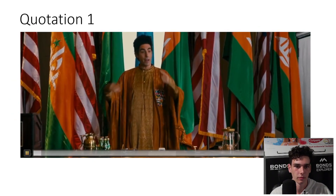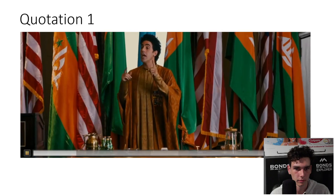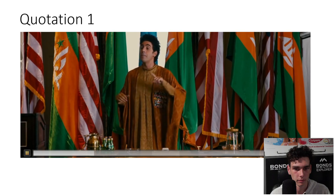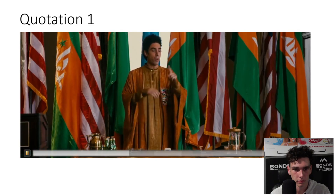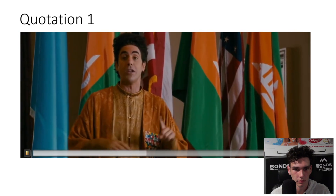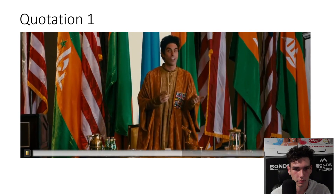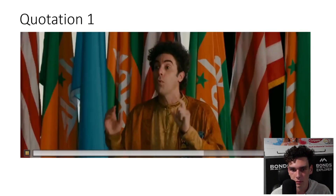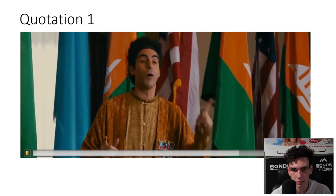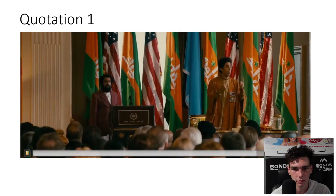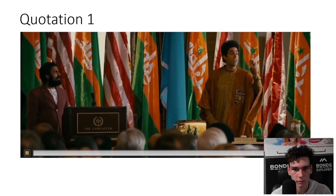An example of this is when he's trying to convince a large audience in America that dictatorships are good and should be supported. This is the scene: "Imagine if America was a dictatorship. You could let 1% of the people have all the nation's wealth. You could help your rich friends get richer by cutting their taxes and bailing them out when they gamble and lose. You could ignore the needs of the poor for healthcare and education. Your media would appear free but would secretly be controlled by one person and his family. You could wiretap phones. You could torture foreign prisoners. You could have rigged elections. You could lie about why you go to war. You could fill your prisons with one particular racial group and no one would complain. You could use the media to scare the people into supporting policies that are against their interests. I know this is hard for you Americans to imagine but please try. I will tell you what democracy is. Democracy is the West."